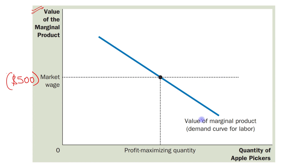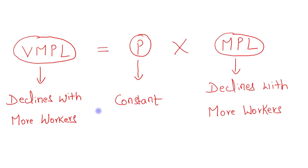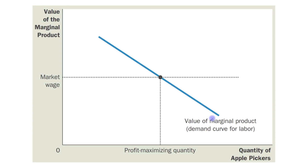The value of marginal product curve is downward sloping. We have seen that marginal product of labor declines with more workers and price is constant, so the value of marginal product of labor also declines with more workers — and that is the reason the VMP curve is downward sloping.